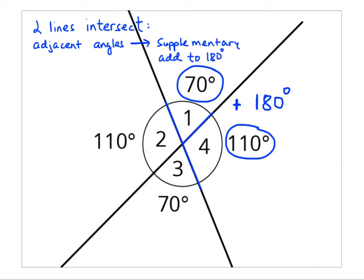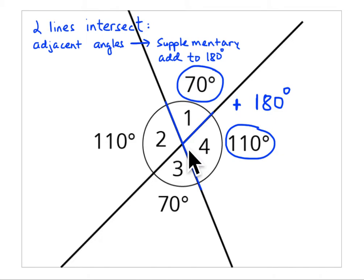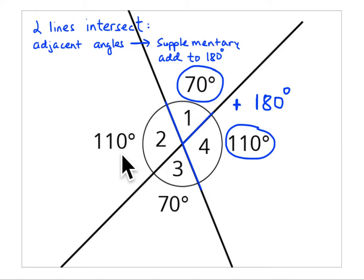This is the summary for lesson 14, presented a little bit differently than what's in the student workbook. Two lines that intersect — adjacent angles are supplementary, they add to 180 degrees. Adjacent is a term from seventh grade meaning they share a common side, so they're right next to each other, and they are supplementary angles when two lines intersect.